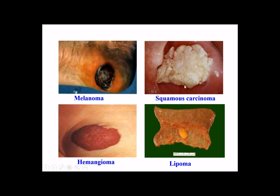Squamous cell carcinoma has a gray-white color. This is the hemangioma — the color is dark red, derived from blood vessel tissue. And this is the lipoma — the color is yellowish.